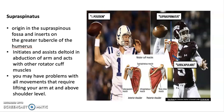Supraspinatus initiates and assists the deltoid in abduction of the arm, and acts with other rotator cuff muscles to increase the strength and stability of the shoulder joint. The supraspinatus muscle tendon is the most commonly injured rotator cuff muscle tendon. If injured, you may have pain and/or limitation of lifting your arm at or above the shoulder level.